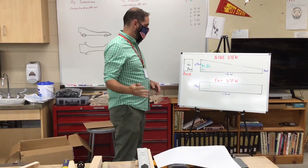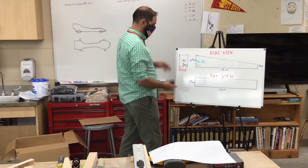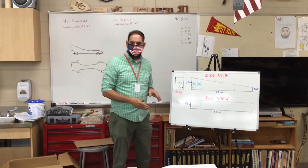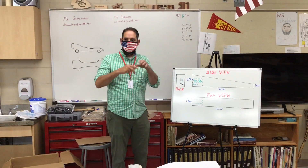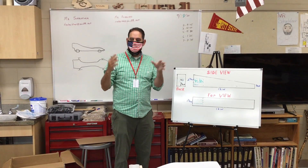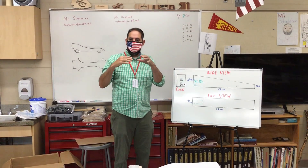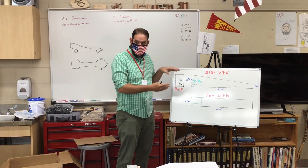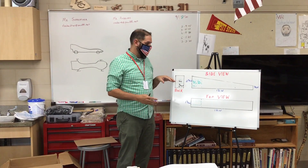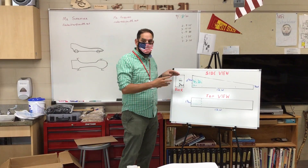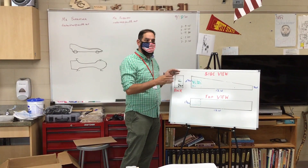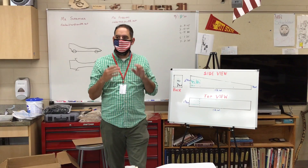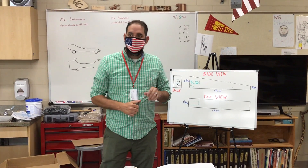Now you have on your graph paper an outline of the block itself. These are the parameters of what your cars can look like. What we're going to do now is we're going to draw the places on the block that we're going to cut off.